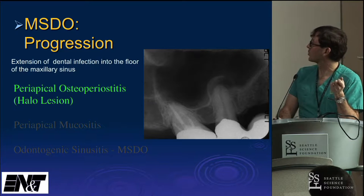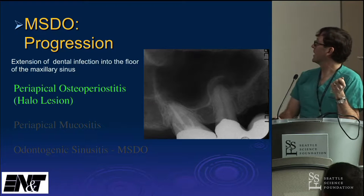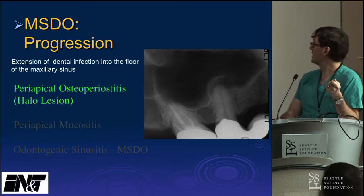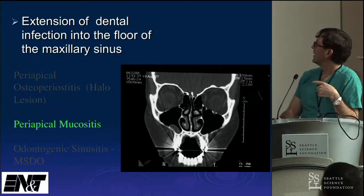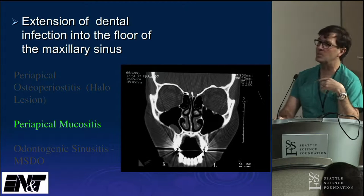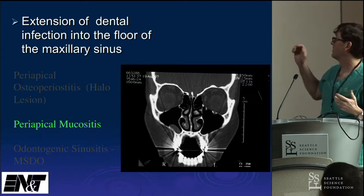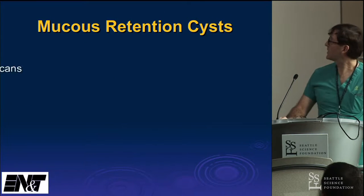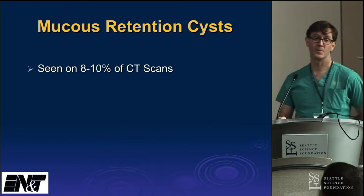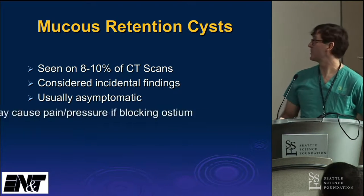Endodontal disease is a progression of basically a tooth abscess or a rotten tooth into the sinus, starting with a periapical halo lesion seen on plain film and CT. This leads to periapical mucositis, which most of us would call a mucus retention cyst. Mucus retention cysts are seen in 8% to 10% of asymptomatic CT scans and are considered incidental findings by most — usually asymptomatic.